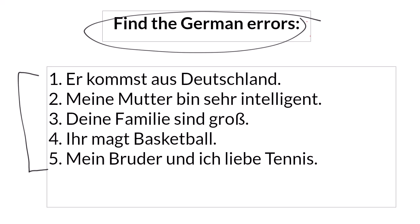In the first sentence, the verb ending 'st' is wrong. The reason for that is that the verb 'kommen' in its infinitive form is governed by the subject 'er'. Er is in charge of the verb and the ending for er is always 't', at least with regular verbs. So it should be: er kommt aus Deutschland — he comes from Germany.